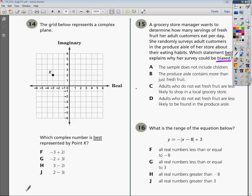Well, as we go down through here and look into the problem, how could this thing be biased? This lady is standing in a grocery store asking people about their eating habits, but she's standing in the produce aisle.